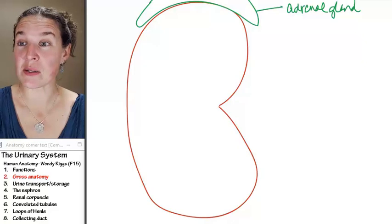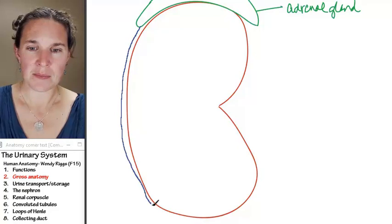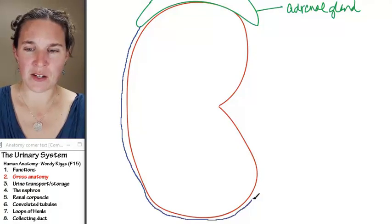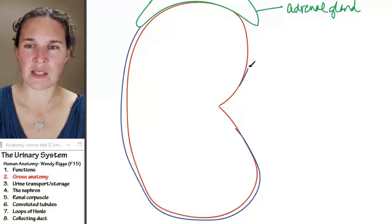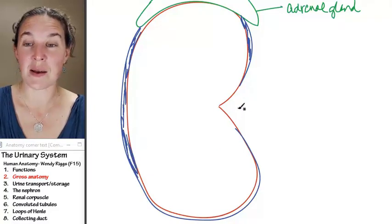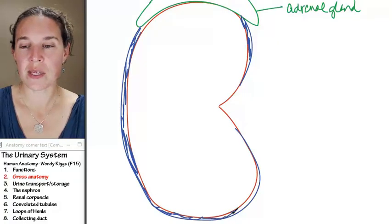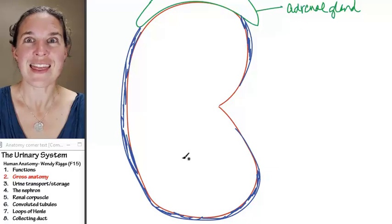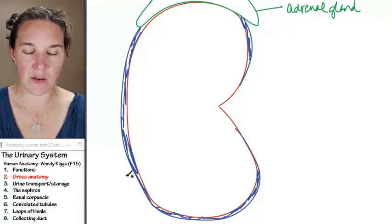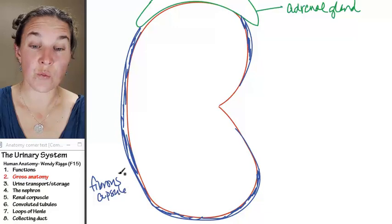Our kidney is surrounded by a layer, and I'm just going to draw this layer outside of here. This is the fibrous capsule of your kidney, and of course, there's two names for it. It's also called the renal capsule.